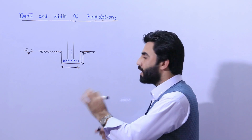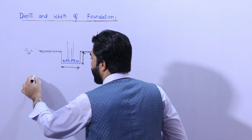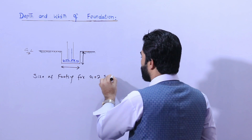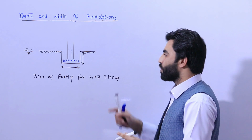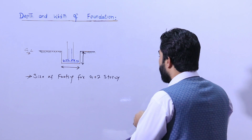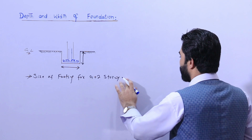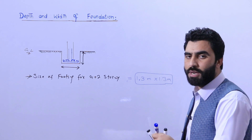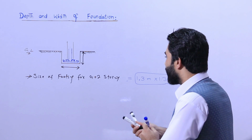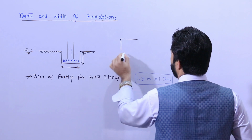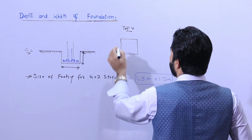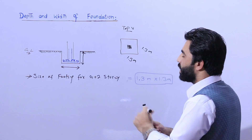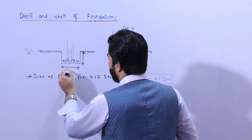The depth is measured from the bottom of the foundation to the ground level. The size of footing for G plus two story — that means a three-floor building — should not be less than 1.3 meter by 1.3 meter. This is the size for a G plus two story residential building, not for a commercial building. Here is the top view: the size is 1.3 meter by 1.3 meter, and inside this is the column.